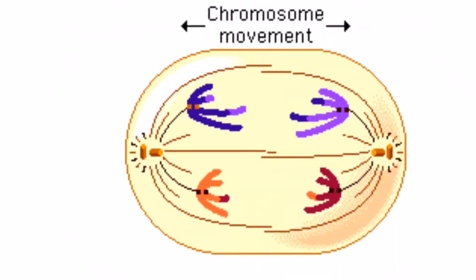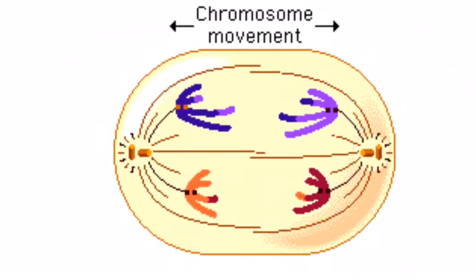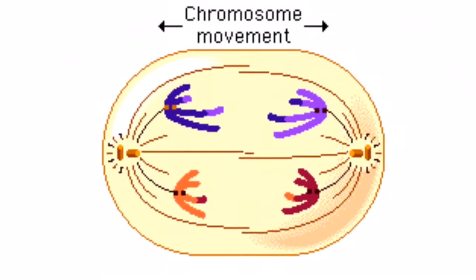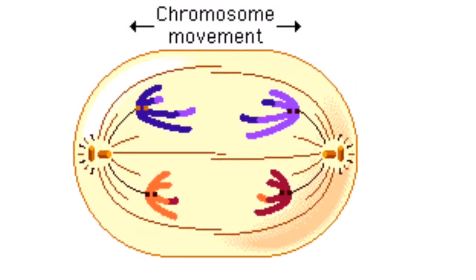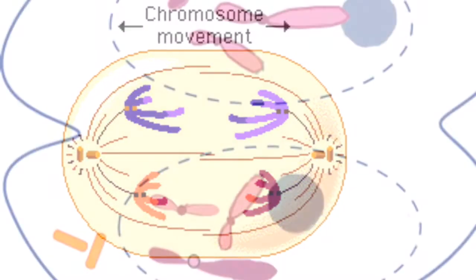Anyway, we gotta take it back and put this train on the track. This station we at is anaphase, just pay attention and be amazed. The chromatids go to opposite sides of the cell. Spindle fibers from the centrioles pull them apart. Man, ain't that swell?